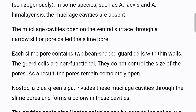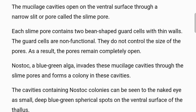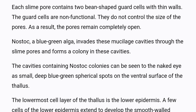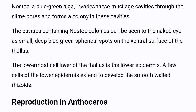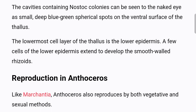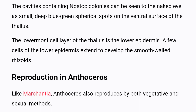The mucilage cavities open on the ventral surface through a narrow slit or pore called the slime pore. Each slime pore contains two bean-shaped guard cells with thin walls. The guard cells are non-functional and do not control the size of the pores; as a result, the pores remain completely open. Nostoc, a blue-green alga, invades these mucilage cavities through the slime pores and forms a colony, visible to the naked eye as small, deep blue-green spherical spots on the ventral surface of the thallus. The lowest cell layer of the thallus is the lower epidermis, and a few cells of the lower epidermis extend to develop the smooth-walled rhizoids.